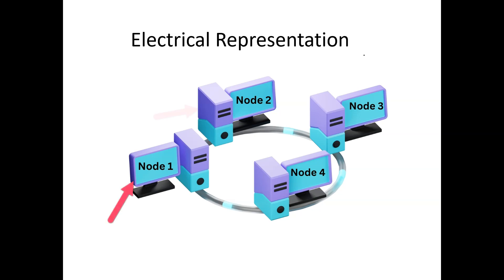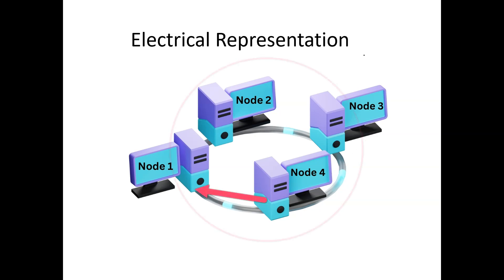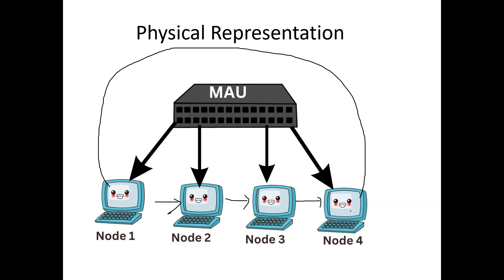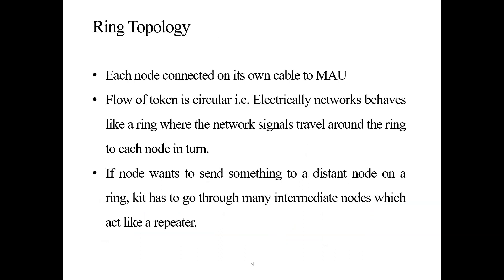As far as the flow of token is concerned, data is sent to node 1, then node 2, node 2 sends data to node 3, node 3 to node 4, and again from node 4 to node 1. This flow of token is in a circular order. In the physical representation, the signal travels from node 1 to node 2, then node 2 to node 3, node 3 to node 4, and node 4 sends data back to node 1. In this manner, ring topology works electrically in circular order.